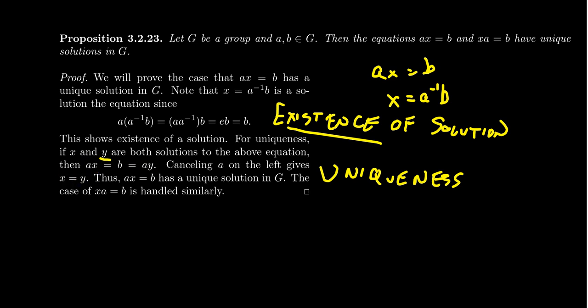So uniqueness is a consequence. The uniqueness of the solution is a consequence of the cancellation that we saw just above. And so because of the group axioms, which cancellation is a consequence of, we can prove that linear equations have unique solutions: ax equals b and xa equals b. xa equals b of course is handled similarly.